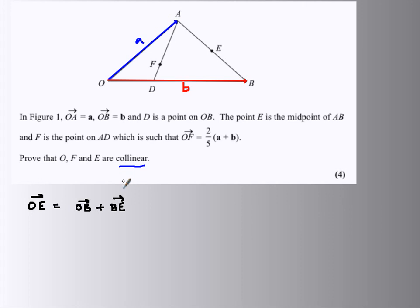Now, BE I can also see is half of BA. And BE, I can see, is going to be BO plus OA. Which, BO is minus b, back along b, OA plus a.